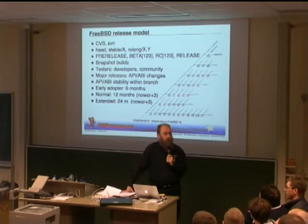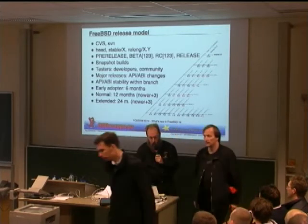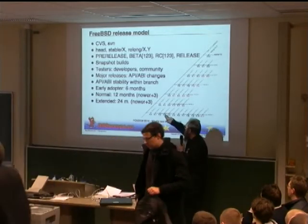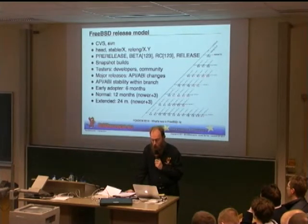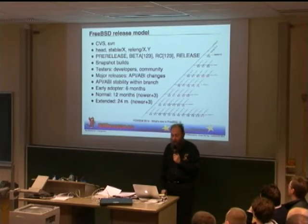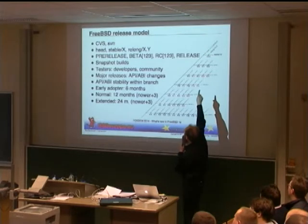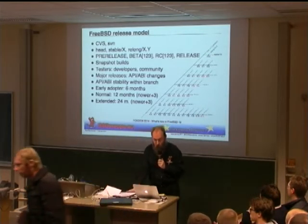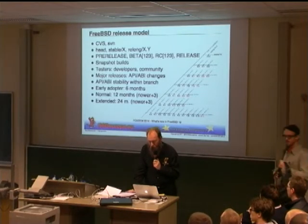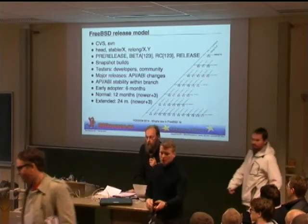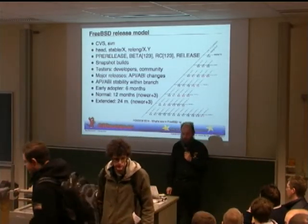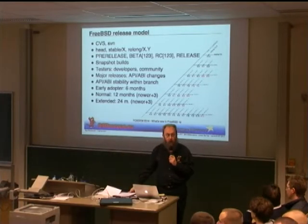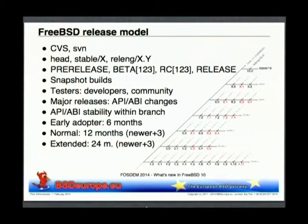When every release is cut from the tree, we get another small branch, depicted by the little arrows pointing upwards. That's what we call the security branches. After a release comes out — say 10.0 — this little branch pointing upwards will only get security fixes or very important bug fixes, stuff that really affects almost everybody. Generally speaking, on these release branches, things are very stable and do not change that much anymore.